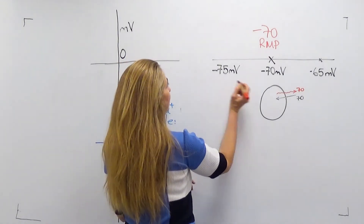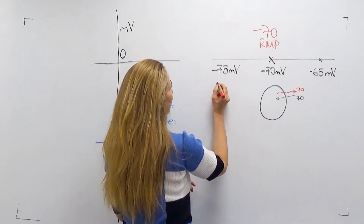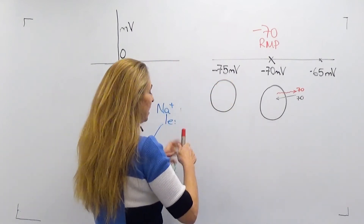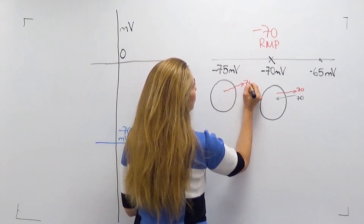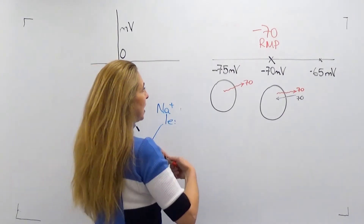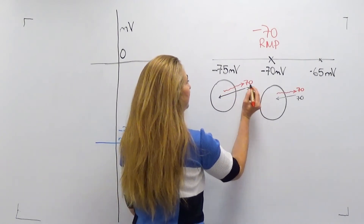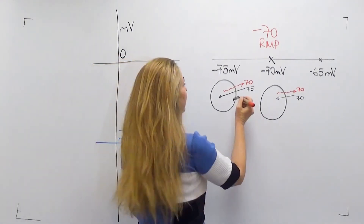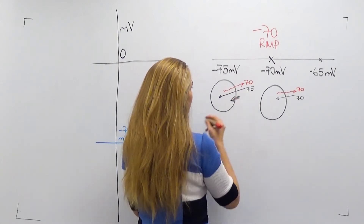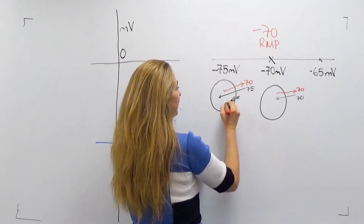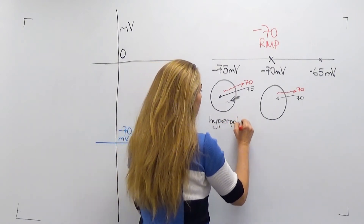If the equilibrium potential of chloride is minus 75, the electrical force still pushes chloride outward with 70 millivolts of force, but the concentration force is now 75, pushing chloride into the cell. The net driving force is inward, so chloride enters the cell bringing negative charges with it.